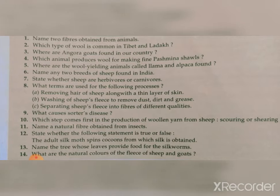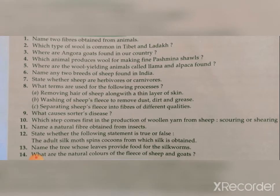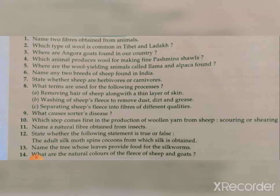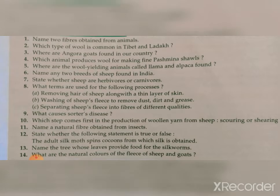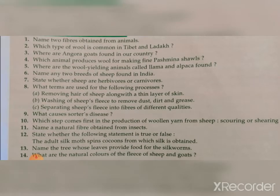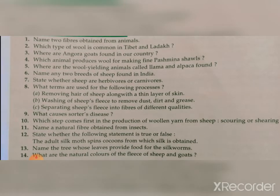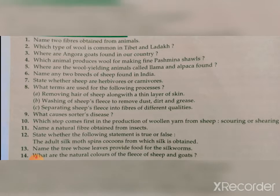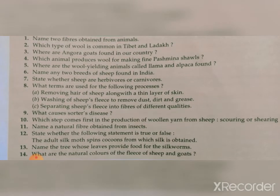Question ten: Which step comes first in the production of wool yarn from sheep — scouring or shearing? The answer is shearing, because first we remove the fleece from the skin, then we remove the dust, dirt and grease. Question eleven: Name a natural fiber obtained from insects. That is silk.